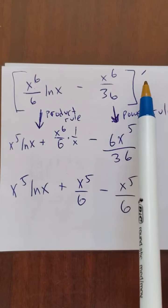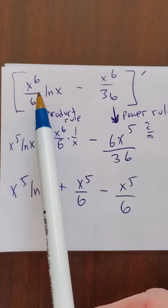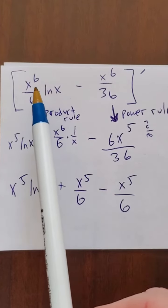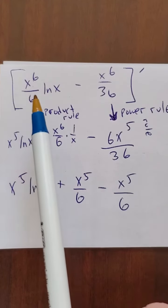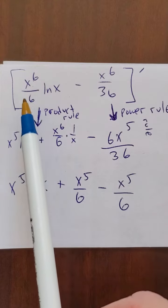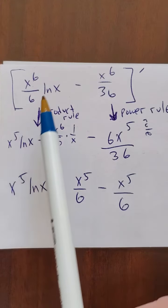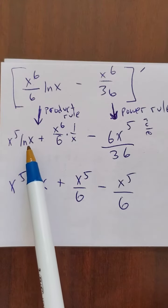If I'm going to take the derivative of everything, well, this part I use the product rule. So f prime g plus fg prime. So the derivative of x to the 6th over 6 is just x to the 5th. Bring down the g, that's ln x.